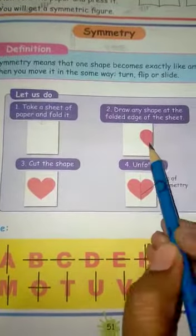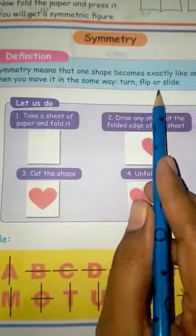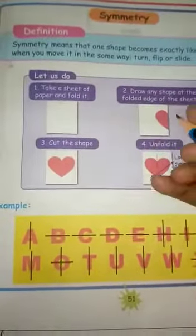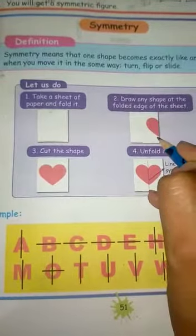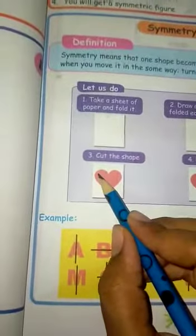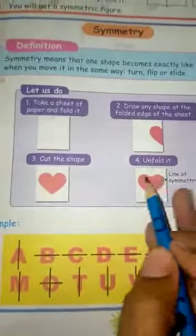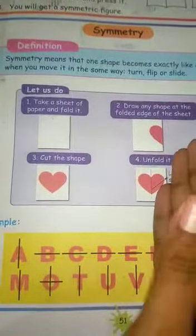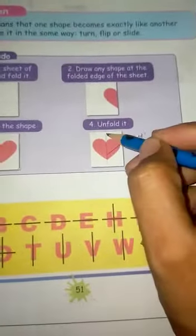We can turn, flip, and slide shapes. If you fold the paper on one side and open it, the other side matches. This is the symmetric line.